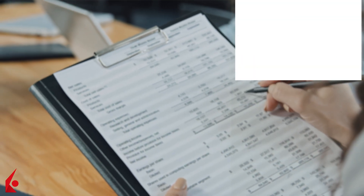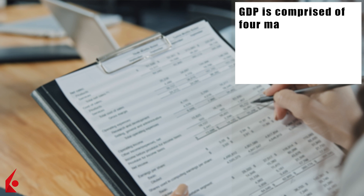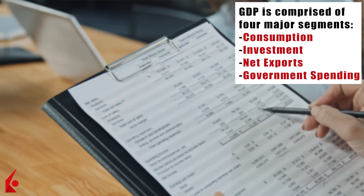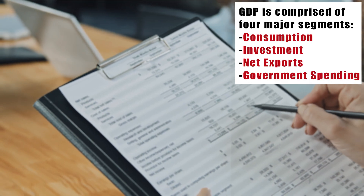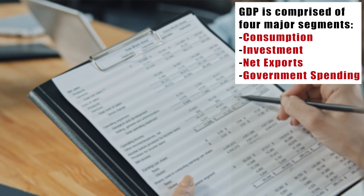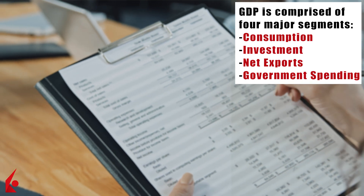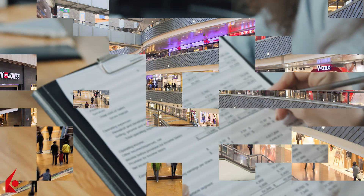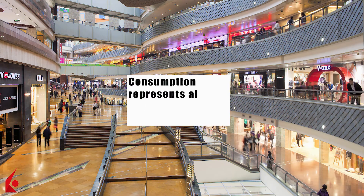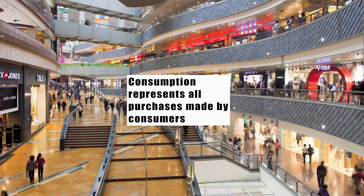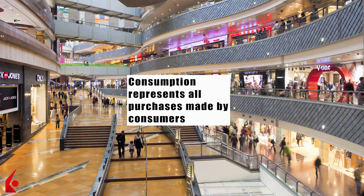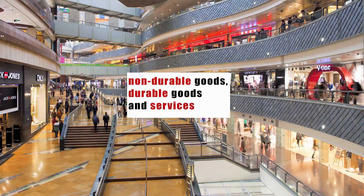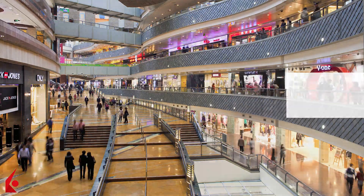GDP is comprised of four major segments: consumption, investment, net exports, and government spending. Consumption represents all purchases made by consumers and is split further into subcategories of non-durable goods, durable goods, and services.